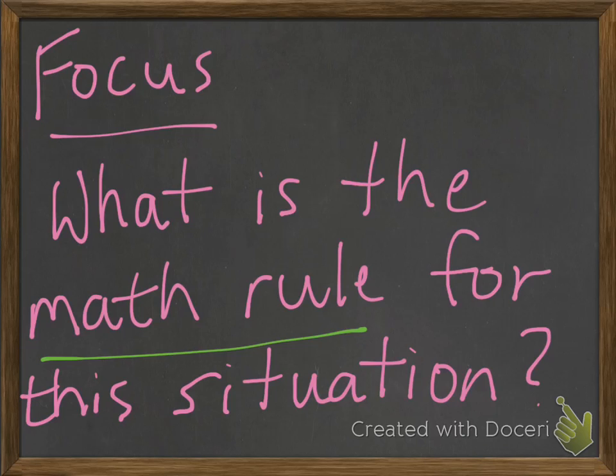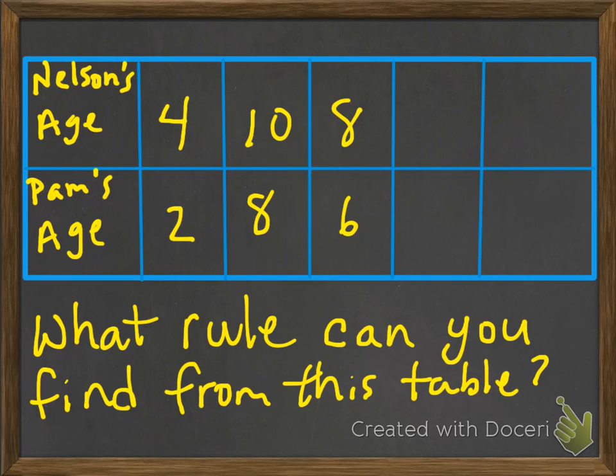Let's take a look at an example. Here we have two people. We have Nelson and his age, and then we have Pam and her age. And the question is, what rule can you find from this table?